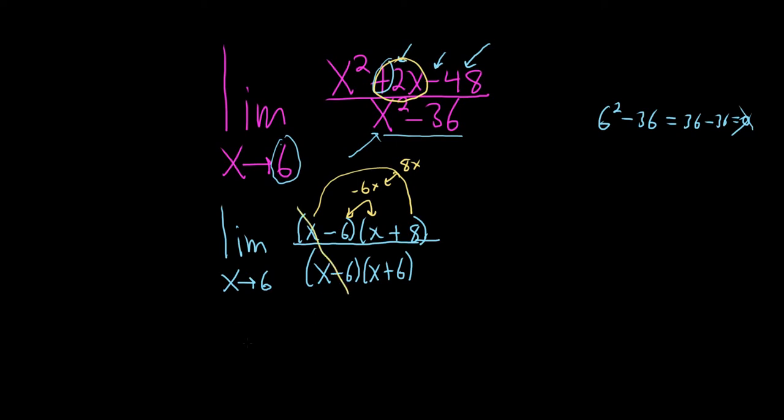All right. Oh, look at this. The x minus 6 is canceled. Very nice. So x approaches 6. I have not done this problem, so it's kind of fun to figure it out. So x plus 8 over x plus 6.